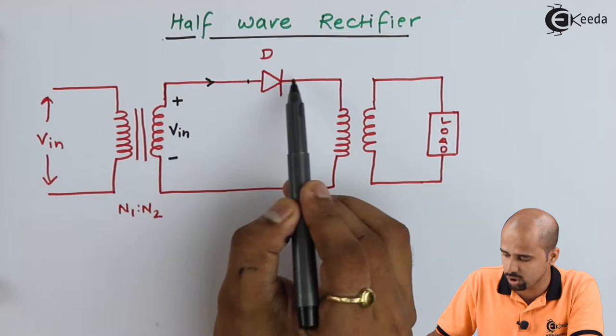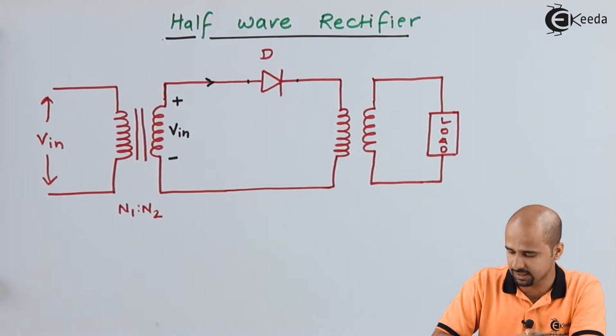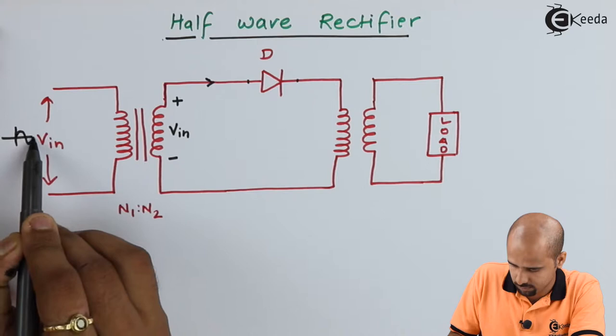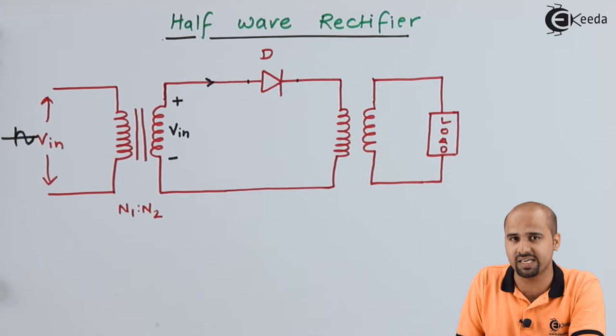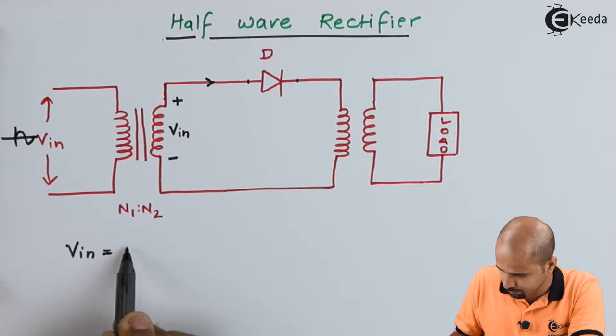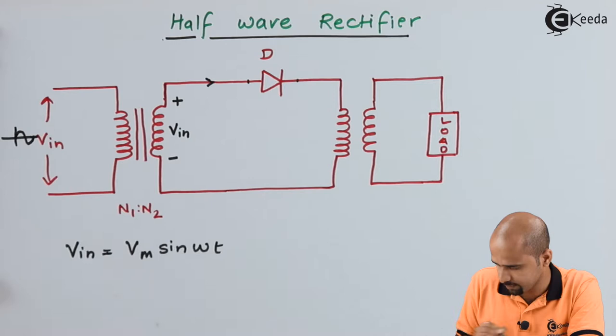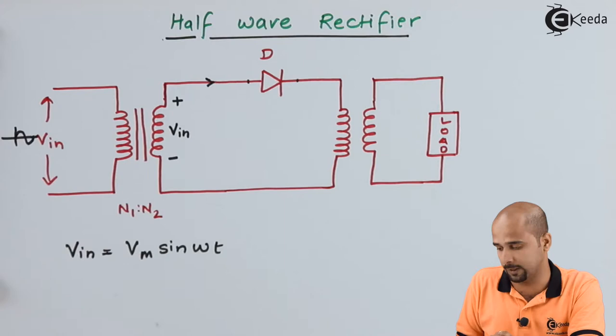We will consider that the input signal is given as an AC input signal. For example, if we consider Vin is equal to Vm into sine of omega t, this will be in the form of an AC signal having two half cycles — the first half cycle is positive and the second half cycle is negative.